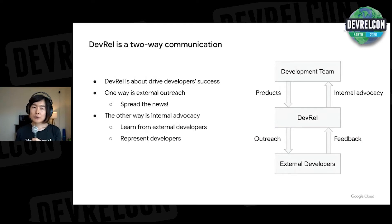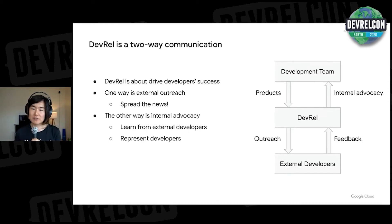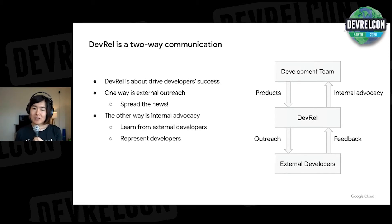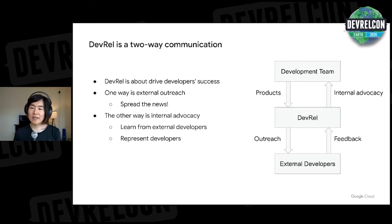So it's all about two-way communication. On the left side, we do the outreach activities. We have technologies and features coming out of the product teams, and DevRel, on behalf of the product teams, spreads the news and helps external developers learn about new technologies and features. On the other way, it's about internal advocacy. We learn from external developers as we help them learn new technologies, and we bring the feedback to internal development teams. And we represent external developers there.